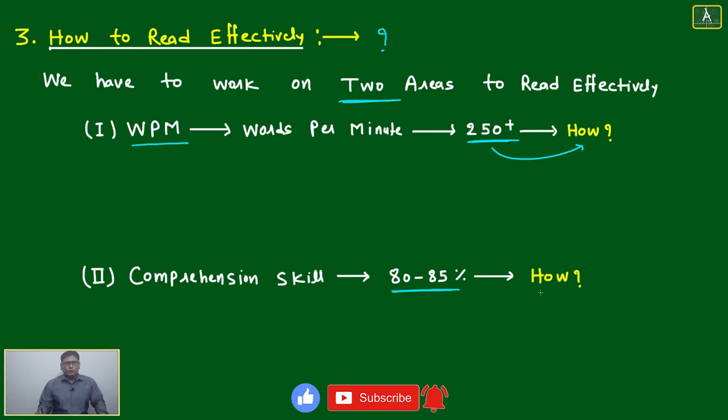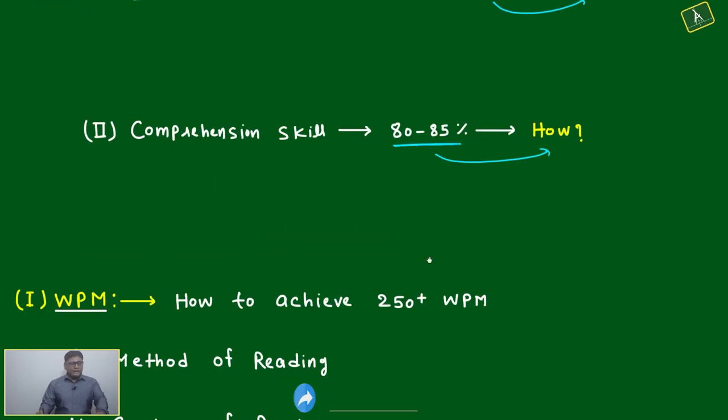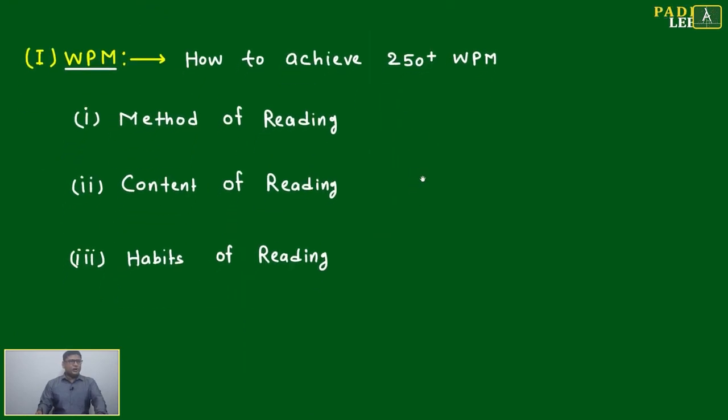Again question will come: how to do it? Answer is WPM - how to achieve 250 plus WPM. We have to work on three areas. Just listen carefully. The video will be uploaded on YouTube, you can see it again. If it is going directly to your brain and you understand the main points, it will be easy to implement.